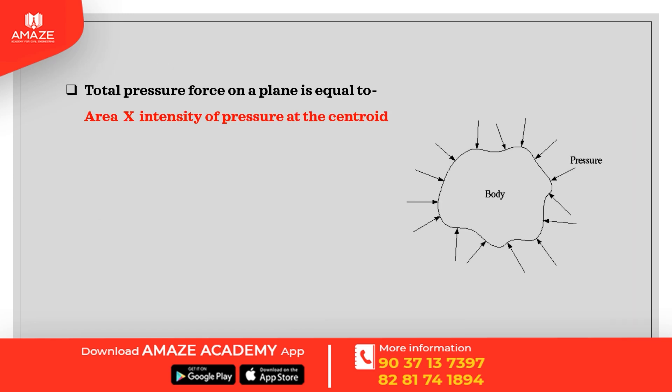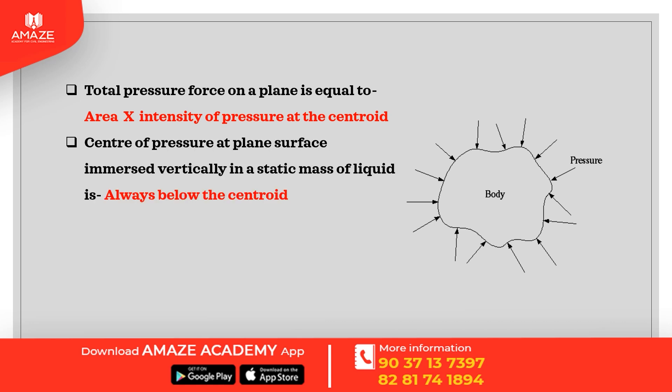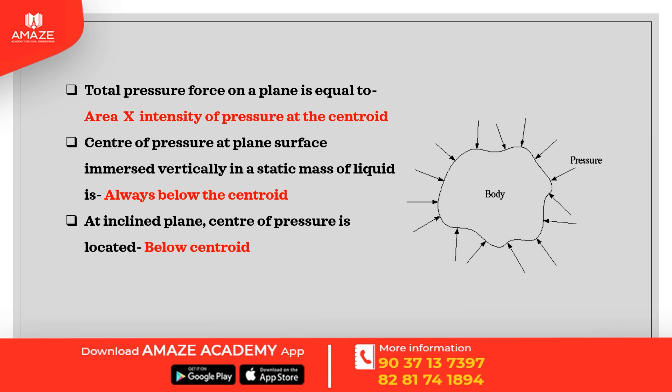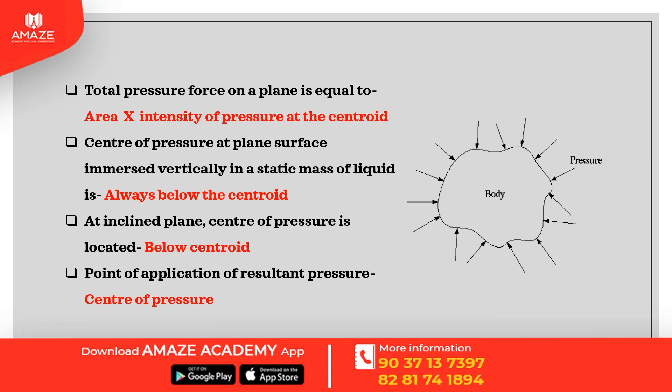Total pressure force on a plane is equal to area multiplied by the intensity of pressure at the centroid. The center of pressure at a plane surface immersed vertically in a static mass of liquid is always below the centroid. At an inclined plane, the center of pressure is always located below the centroid. The point of application of the resultant pressure is also the center of pressure.